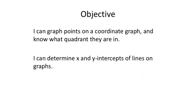That covers our two objectives: looking at points on the coordinate graph as ordered pairs and identifying what quadrant, axis, or origin they're on; and determining x and y-intercepts of lines. For x-intercepts, the y value is 0. For y-intercepts, the x value is 0. Find their corresponding values and you're good.